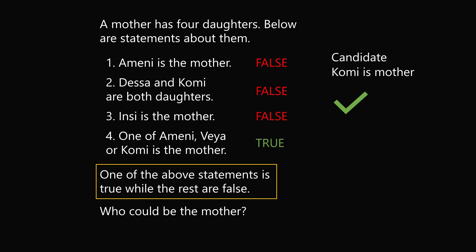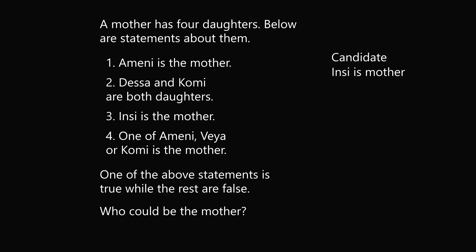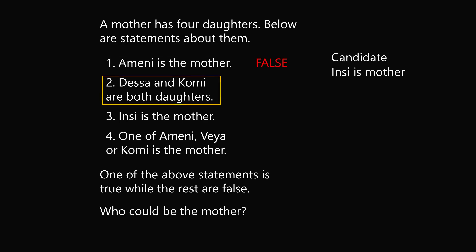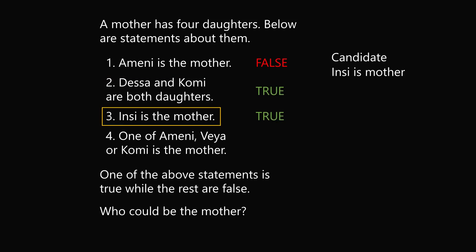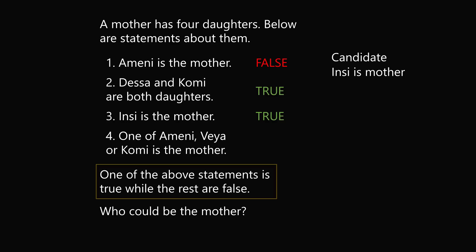But the question asks who could be the mother, so are there any other possibilities? Let's work through the remaining cases. If Insi is the mother, then A-meni is the mother would be false. Then Dessa and Komi would both be daughters, making statement 2 true. And statement 3, that Insi is the mother, would also be true. But now statements 2 and 3 are both true, and we know only one can be true. So we've derived a contradiction — Insi cannot be the mother.